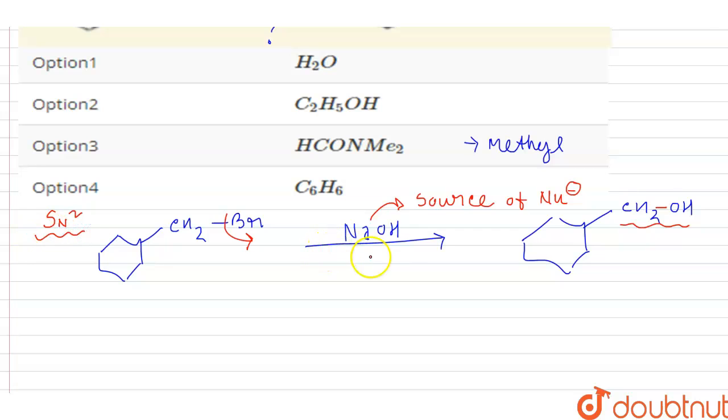So we have to find the proper solvent and as we know that SN2 reaction proceeds in presence of a very strong nucleophile or we can say that polar aprotic solvent. Polar aprotic solvent means very good nucleophile.